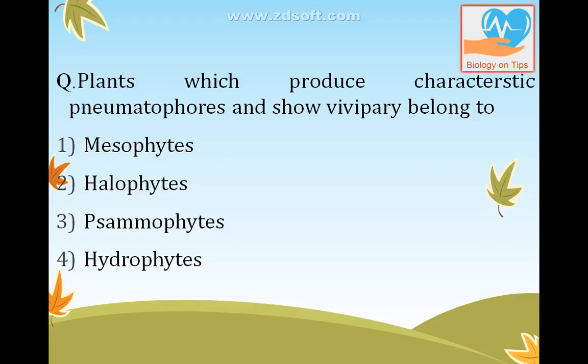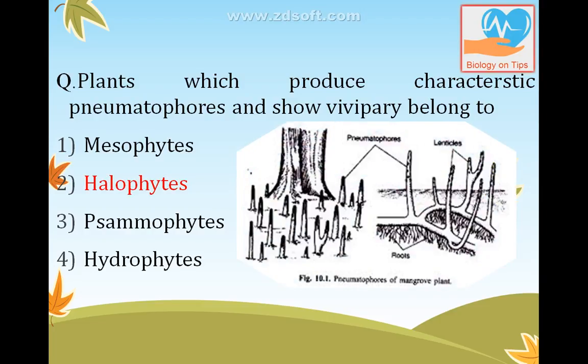Plants which produce characteristic pneumatophores and show vivipary belong to halophytes — an important topic for class 11th. Halophytes are plants which grow in a saline environment where salt concentration in the soil is very high. You can see the diagram. They also carry out the process of vivipary.